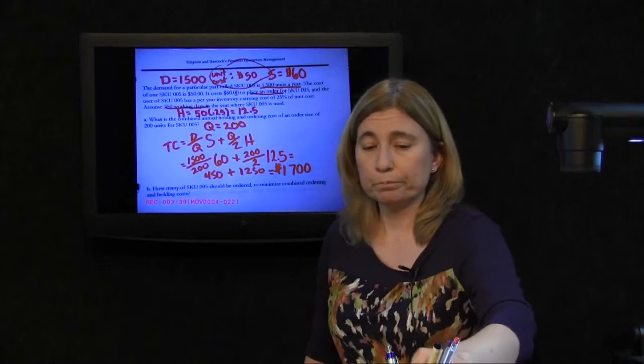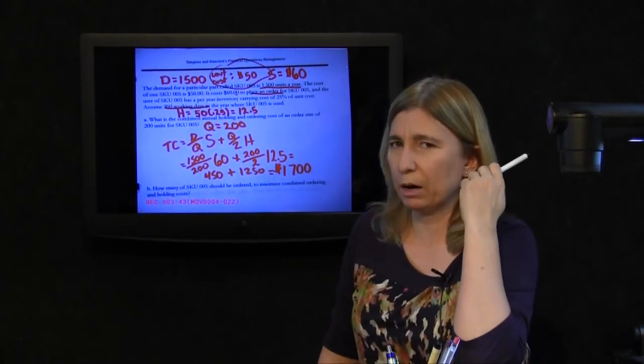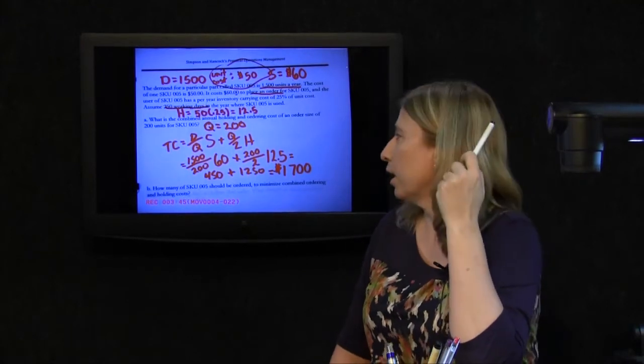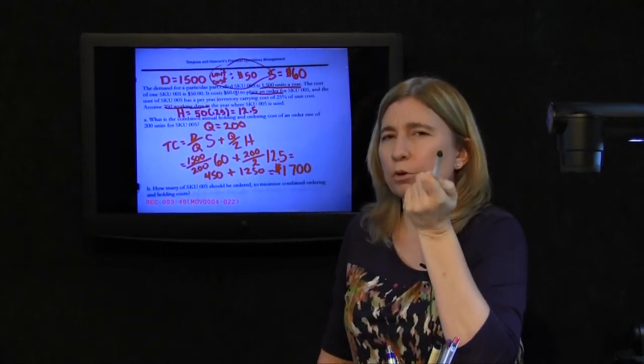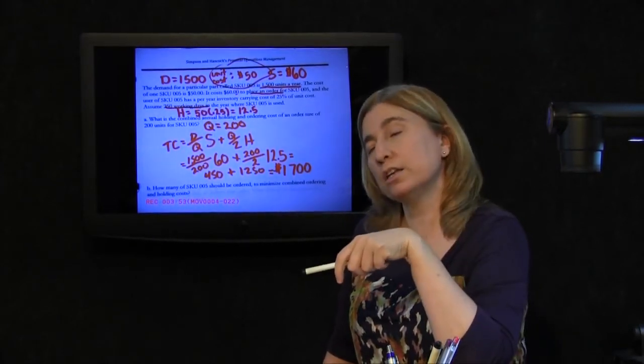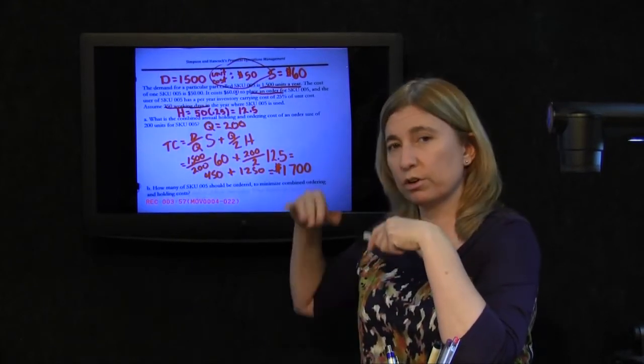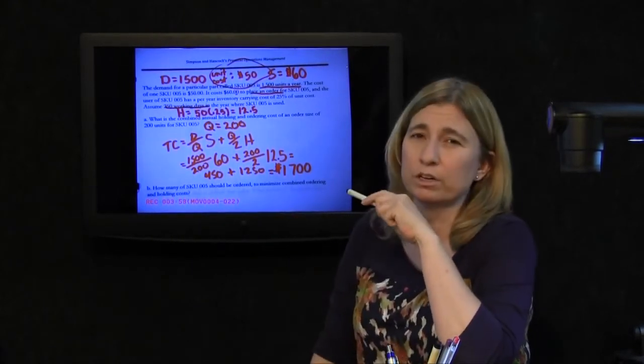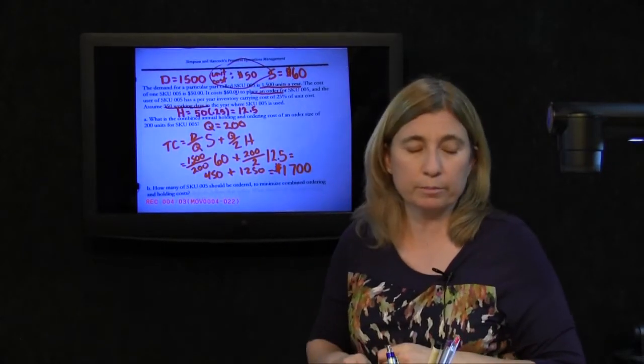And right away I know that this is not the most economic order quantity. How do I know that? Because the most economic order quantity will have a really interesting feature, and that's when you do calculate its cost, these two costs tend to balance the ordering cost and the holding cost, and notice how they don't here. But nonetheless, that is the cost of ordering them 200 at a time.